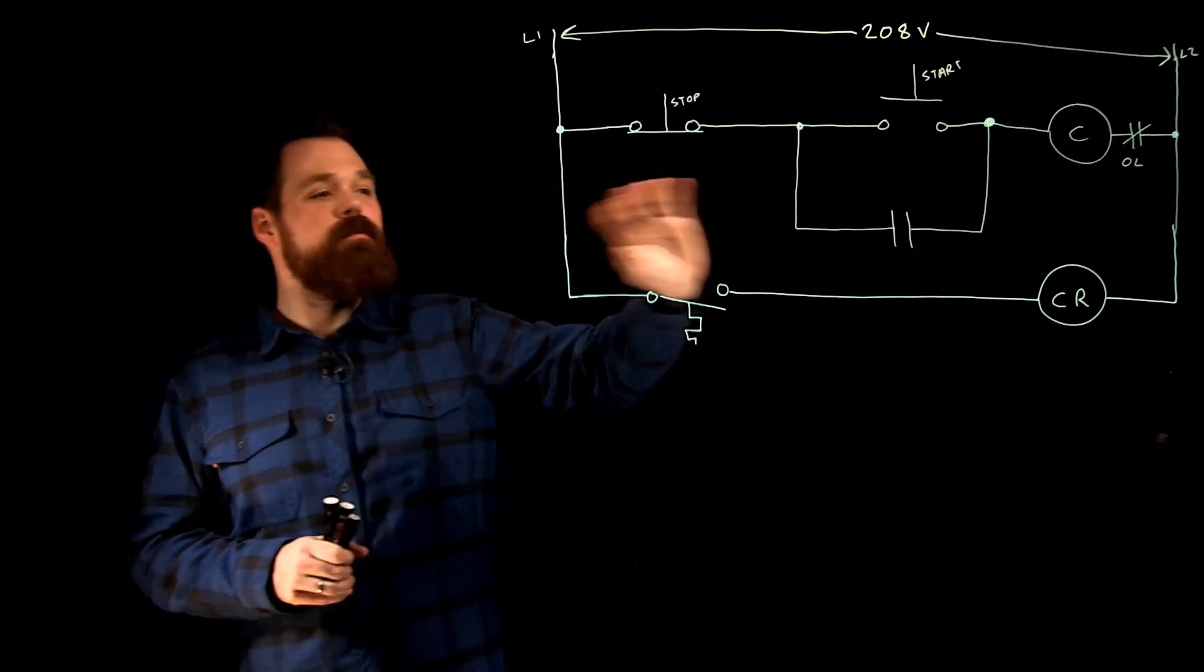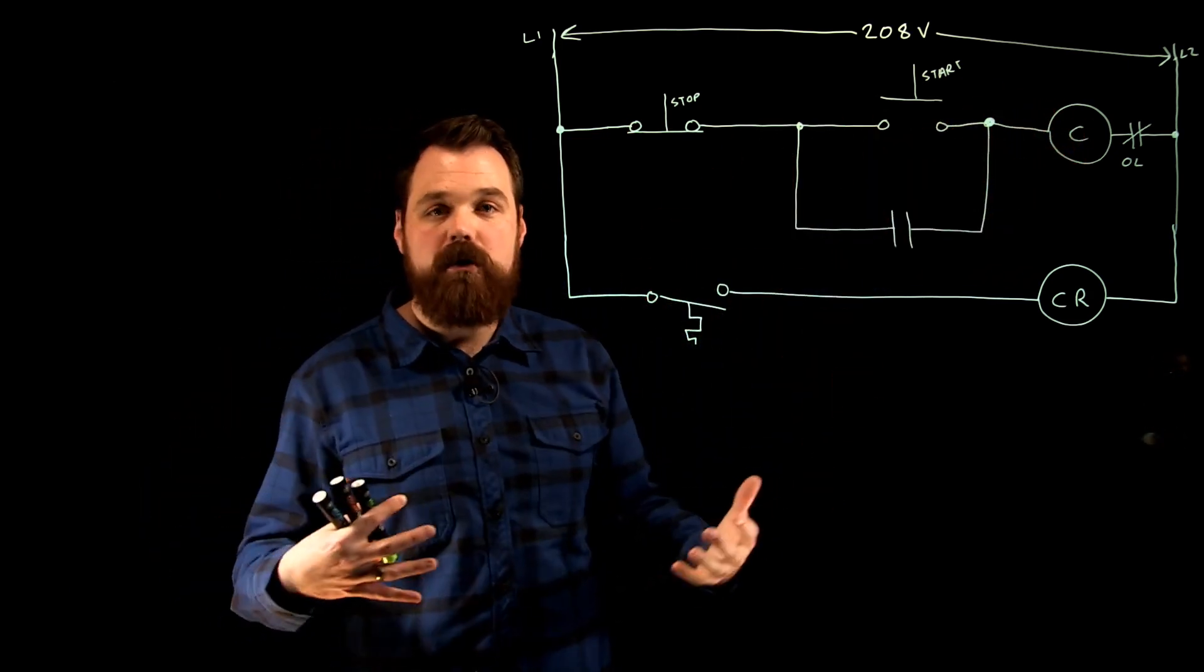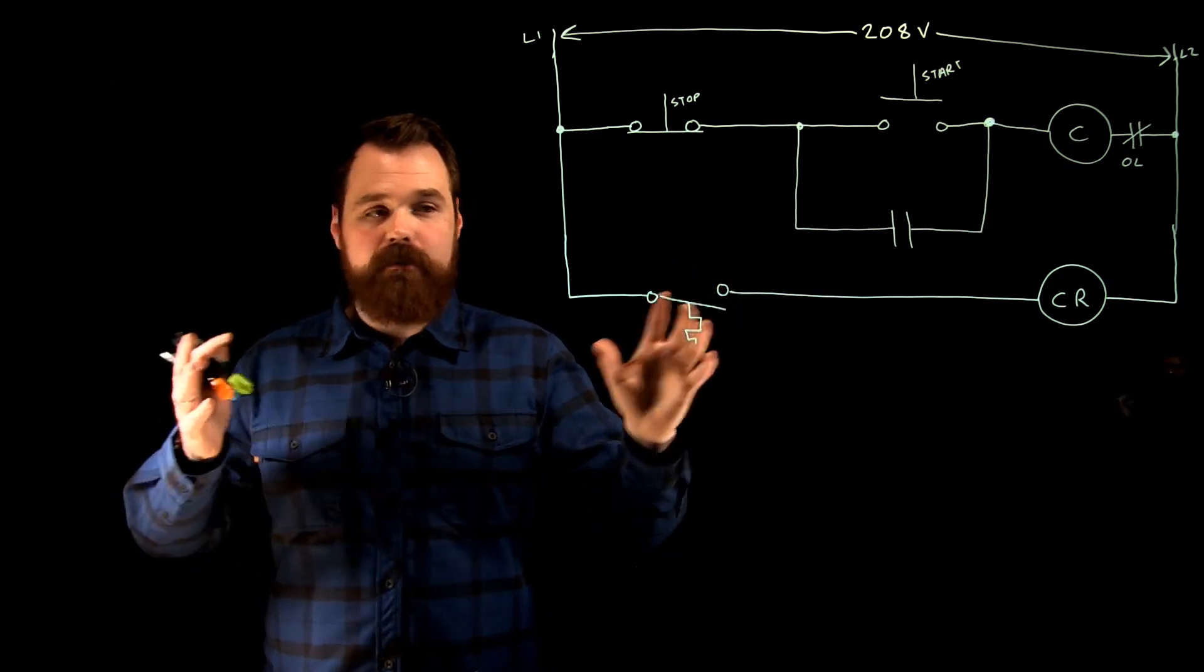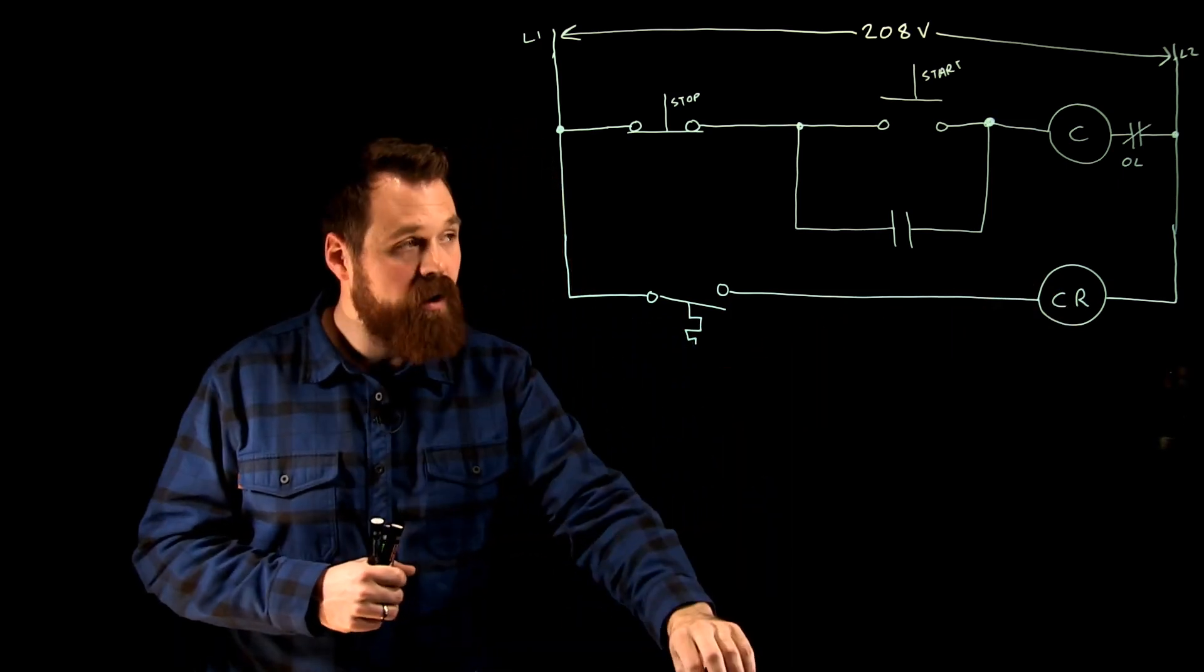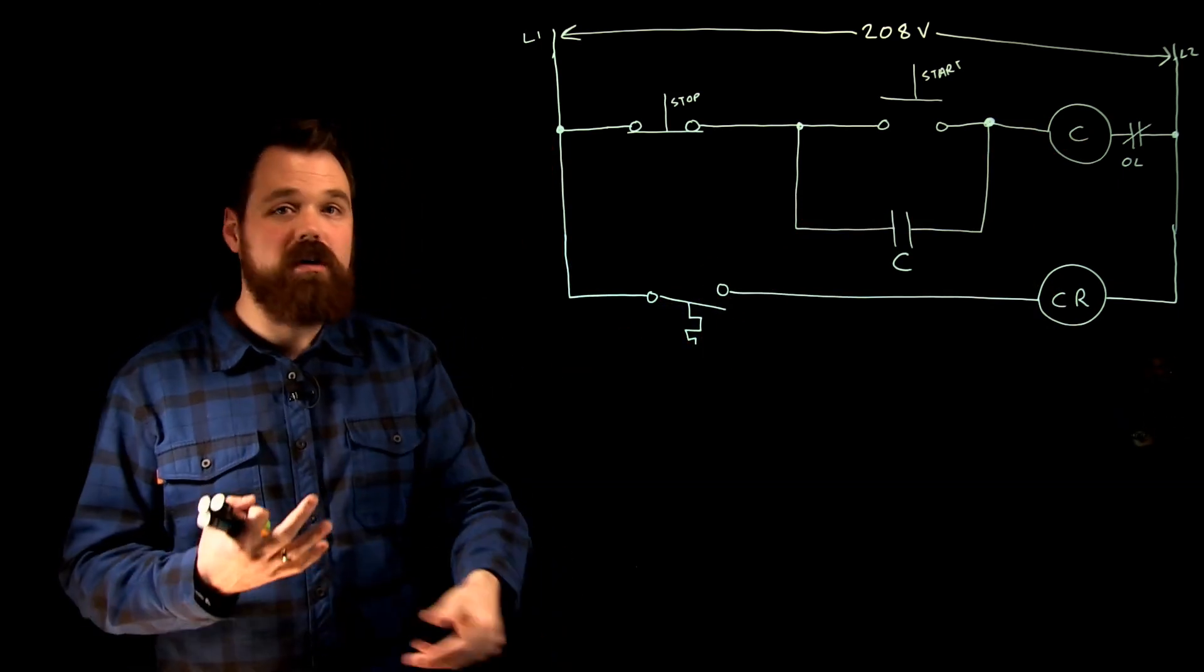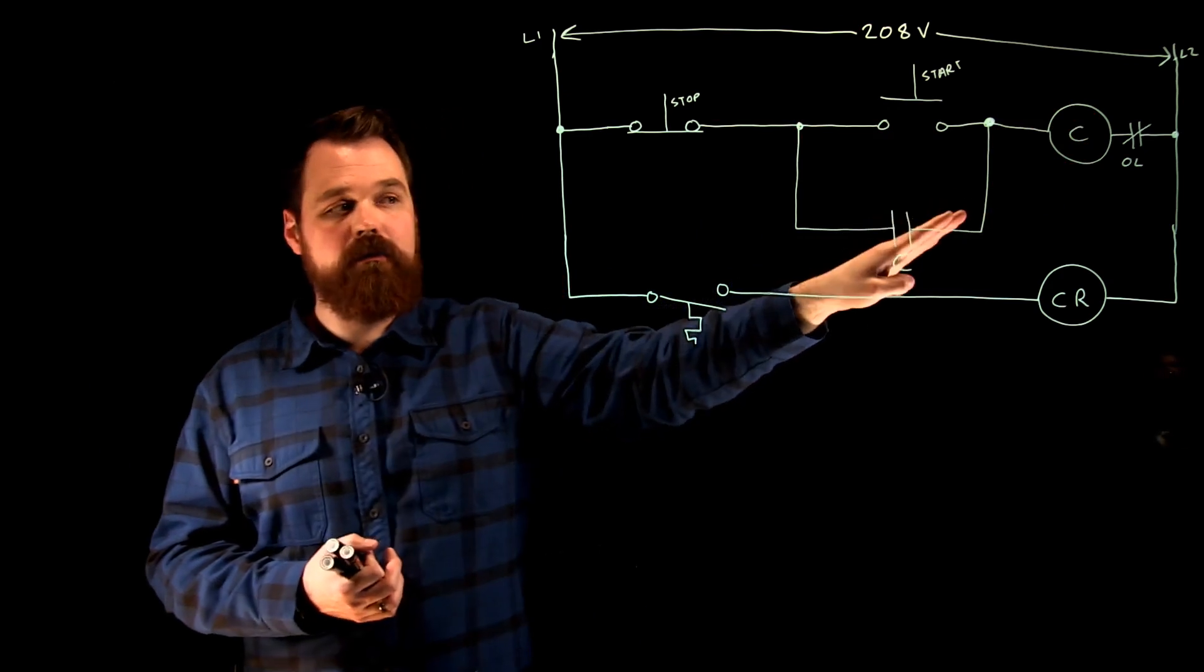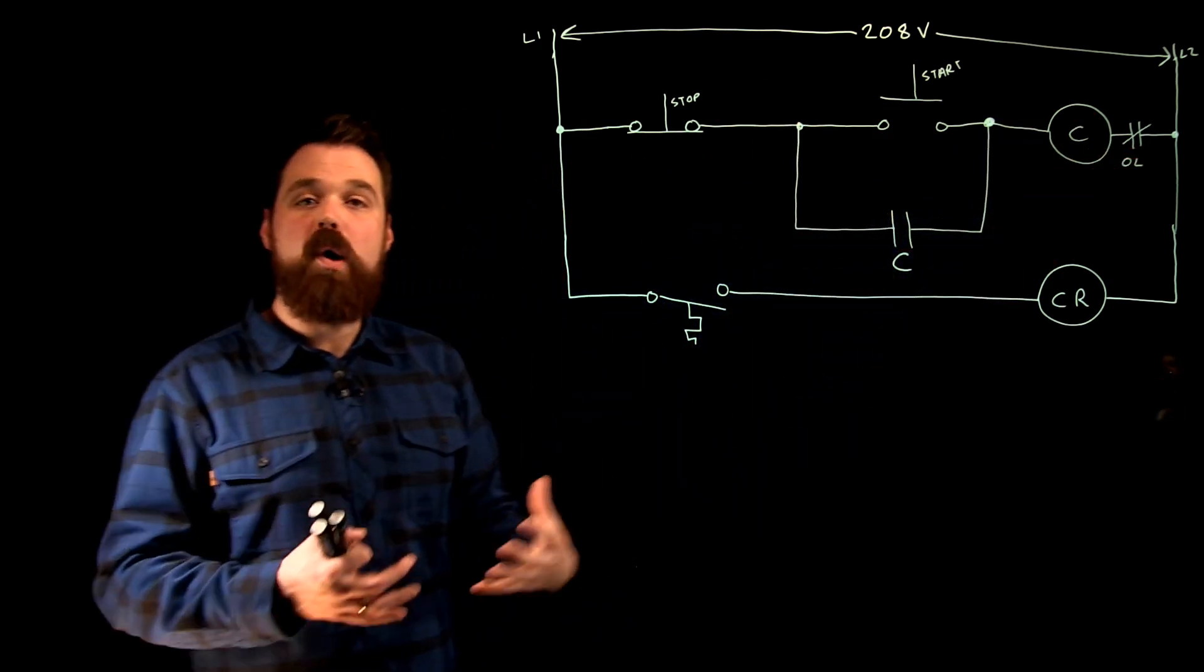So what I've got here is just a simple start-stop station running a contactor to run a motor. And then in addition I have just for sake of conversation a temperature switch which controls a control relay. Now we know our holding contacts are going to be controlled by our contactor. So how this circuit would normally work, we press the start button, contactor would energize, we would close our holding contacts, we would see that path of current and our motor would run.